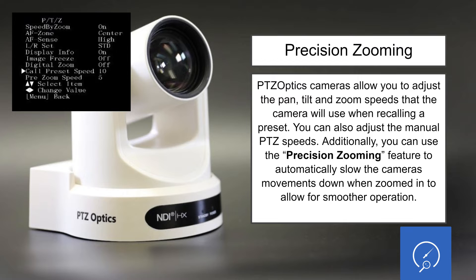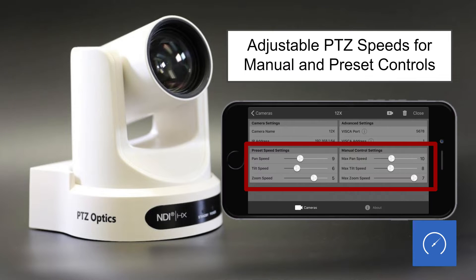Speaking of PTZ presets, precision zooming and speed control are found in the PTZ camera menu. You can adjust both manual and preset speeds. We've talked about that before so I won't go into too much detail, but it is a good feature to understand.